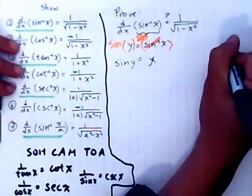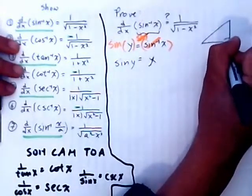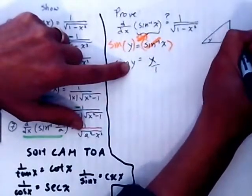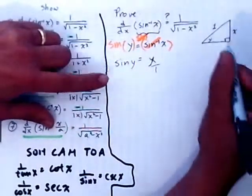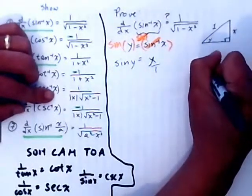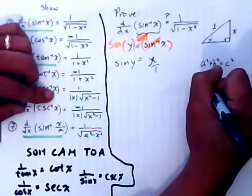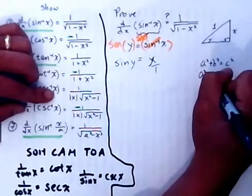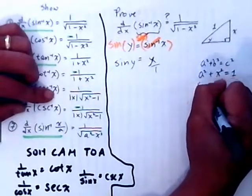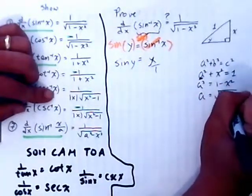At this stage, you have to draw the triangle — it's going to be extremely helpful. The sine of that angle equals x over 1; sine is opposite over hypotenuse. You have to figure out the third side using the Pythagorean theorem: a squared plus b squared equals c squared. So a squared plus x squared equals 1, giving a squared equals 1 minus x squared, and a equals the square root of 1 minus x squared.